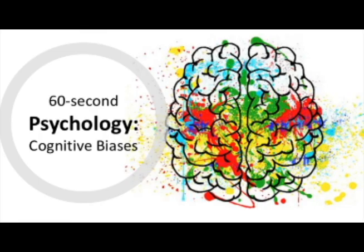Another cognitive bias that skews the way we interpret the behaviour of others is hostile attribution bias. This is when we interpret another person's behaviour as hostile when it is actually neutral. For example, if someone accidentally bumps into you and spills your drink, rationally this is neutral behaviour. However, someone with high levels of hostile attribution bias might interpret this action as deliberate and hostile, therefore causing them to respond in a way that they feel is appropriate to this hostile situation. This theory can therefore be used to explain aggression in some cases.